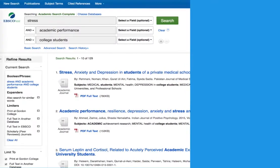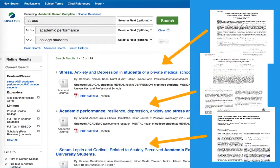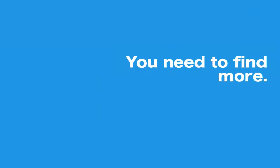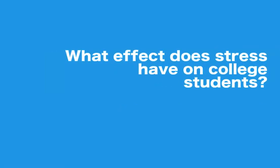So you're working on your research paper and maybe you found a few articles in the library database that are useful, but you need to find more. This video will show you how you can refine your search to find additional articles. Let's say your research topic was something like: what effect does stress have on college students?